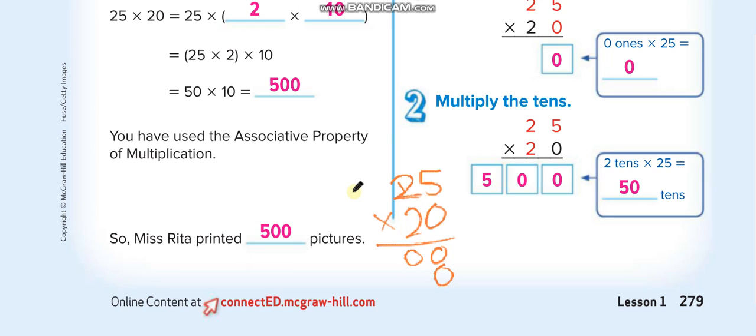Now we'll multiply. 2 times 5 is 10. 0 here. 1 up. And 2 times 2, 4 plus 1, 5. And now we add both of them. 0 plus 0, 0. 0 plus 0, 0. And 5 alone. So this is the actual way when we multiply a 2-digit number by a 2-digit.